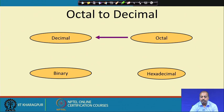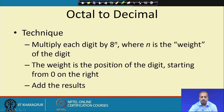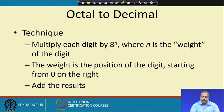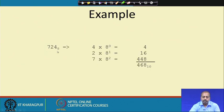Similarly, we can convert an octal number to decimal by multiplying each digit by 8 to the power n, where n is the weight of the digit starting from 0 on the right, then adding all the results. For example, 724 base 8: 4 × 8⁰ = 4, 2 × 8¹ = 16, 7 × 8² = 448. Summing them gives 468. That is how we convert an octal number into a decimal number.